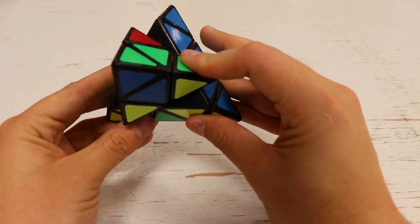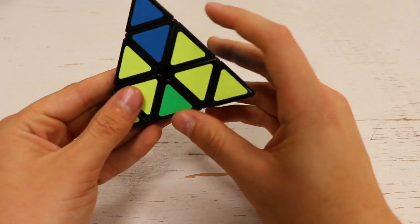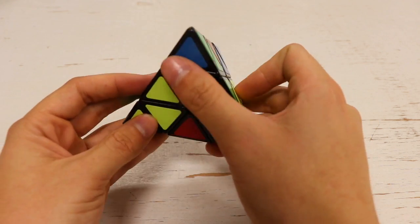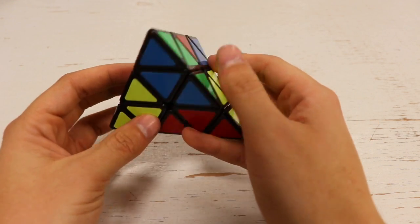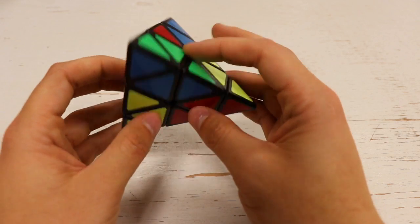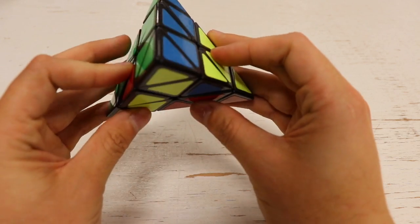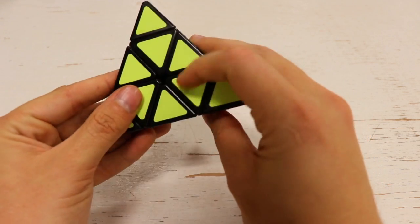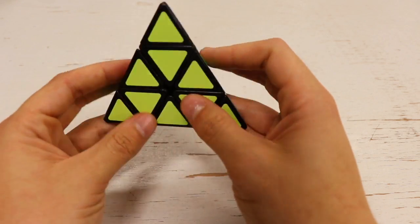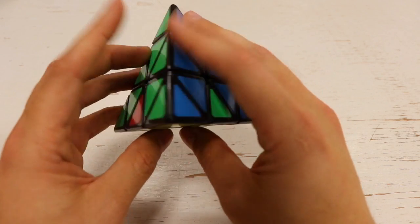So that we can now rotate this and put it where it goes. And now what we can do is rotate this out of the way so that when we go back down and put this where it belongs, we don't affect this green and blue here.